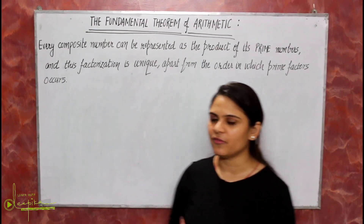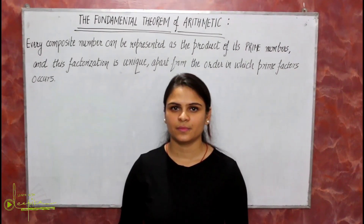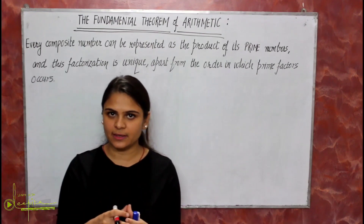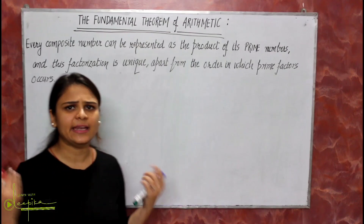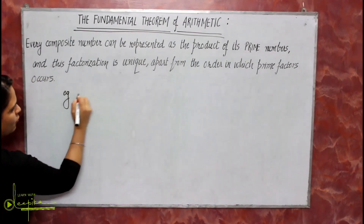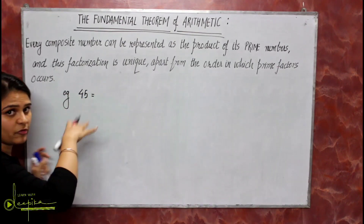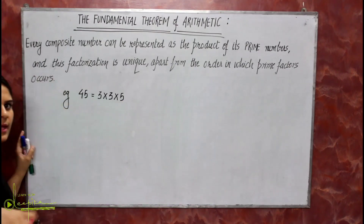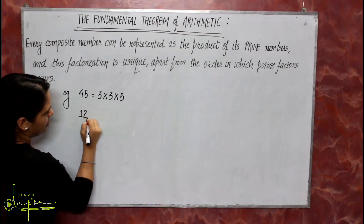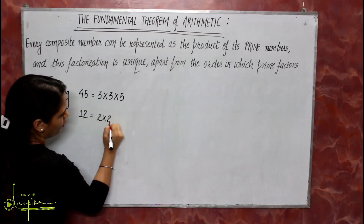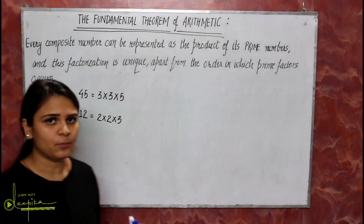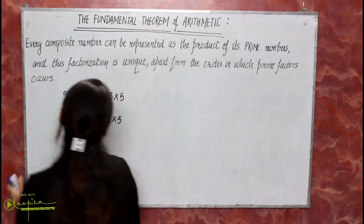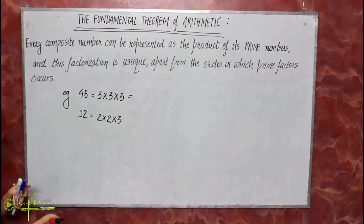Let's start with the Fundamental Theorem of Arithmetic. It states that every composite number can be represented as the product of its prime numbers. For example, 45 can be written as 3 × 3 × 5 = 45. Similarly, 12 can be written as 2 × 2 × 3 = 12. This is also known as the prime factorization method.